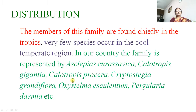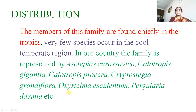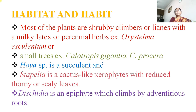Distribution: members of this family are distributed chiefly in the tropics, with very few species in cool temperate regions. In our country the family is represented by Asclepias, Calotropis gigantea, Calotropis procera, Cryptostegia grandiflora, Oxystelma, and Pergularia daemia. These are some of the main important plants found in our country.